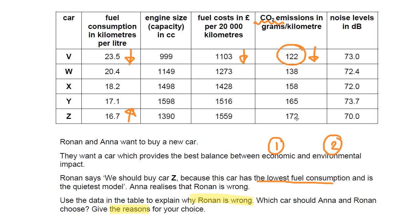You could have said environmentally car Z is better, because it produces the least noise pollution. I personally wouldn't have gone down that route when answering this question. In any case, you can see that economically car Z is going to be the worst one. I thought noise was a red herring at first, but you can get one out of the two environmental marks by saying that.